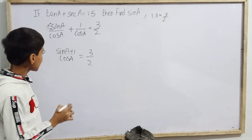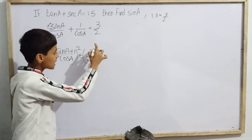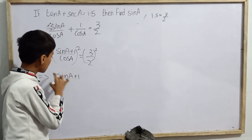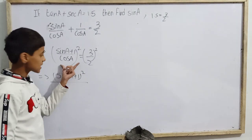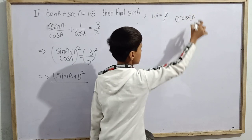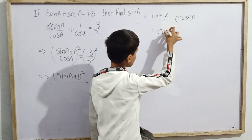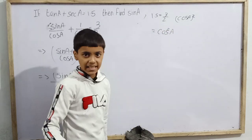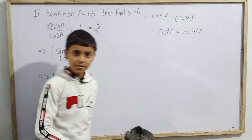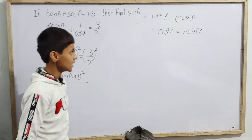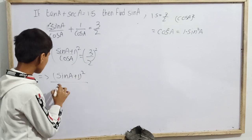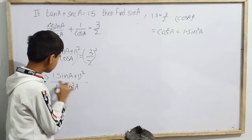Next, we square both sides of the equation. Squaring the left side gives (sin(a) + 1)² / cos²(a). We then replace cos²(a) using the identity cos²(a) = 1 − sin²(a), so the denominator becomes 1 − sin²(a).